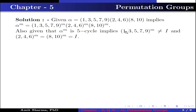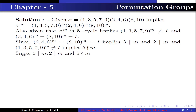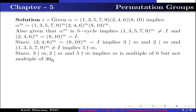Also given that alpha to the power m is a 5-cycle, this implies (1, 3, 5, 7, 9)^m cannot be identity, and (2, 4, 6)^m and (8, 10)^m must equal identity. Since (2, 4, 6)^m equals identity, 3 divides m because it is a 3-cycle permutation. Since (8, 10)^m equals identity, 2 divides m because it is a 2-cycle permutation. Also, (1, 3, 5, 7, 9)^m is not equal to identity, which implies 5 does not divide m because it is a 5-cycle permutation. Since 3 divides m and 2 divides m but 5 does not divide m, this implies m is a multiple of 6 but not a multiple of 30.